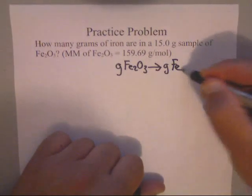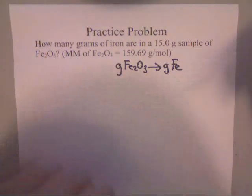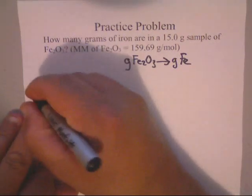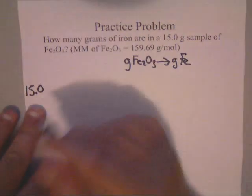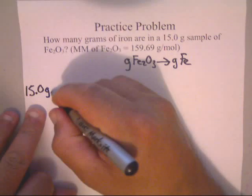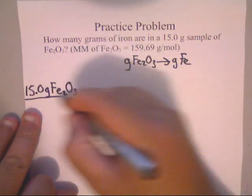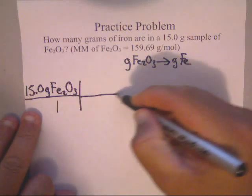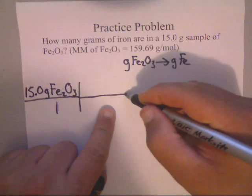That's basically what you're doing, so you've got a little bit of a game plan. Let's go ahead and start writing the problem out. We've got 15.0 grams of iron three oxide.